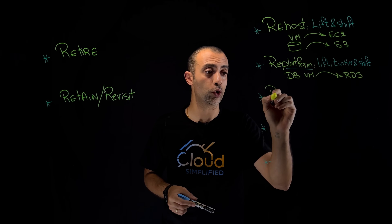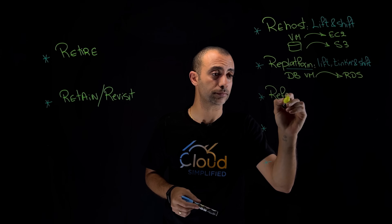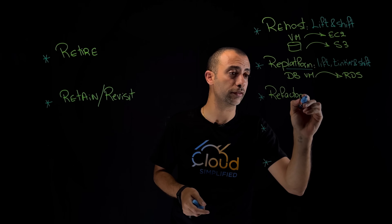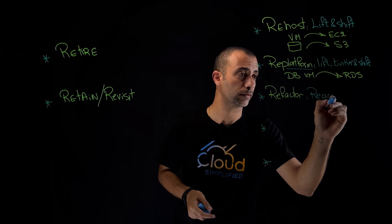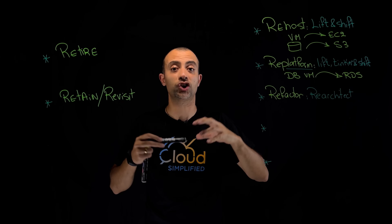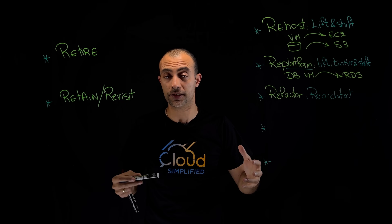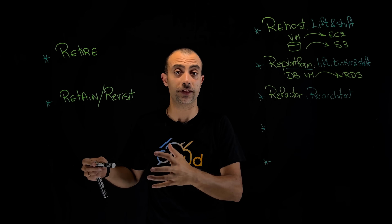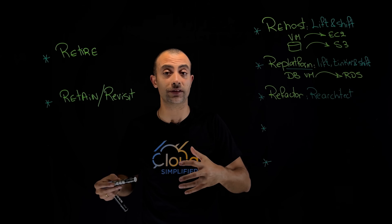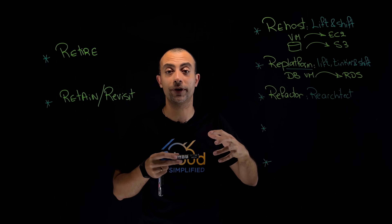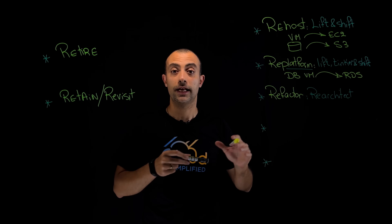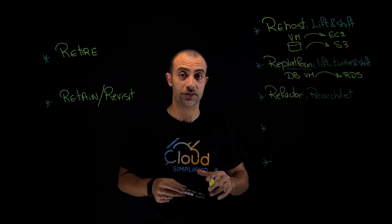The fifth migration strategy is what we call Re-factor, also known as Re-architect. This is when I change the architecture of my application. For example, maybe I have a monolith application that I would like to break down into microservices, so I'm going to re-factor, re-design, and re-code my application.